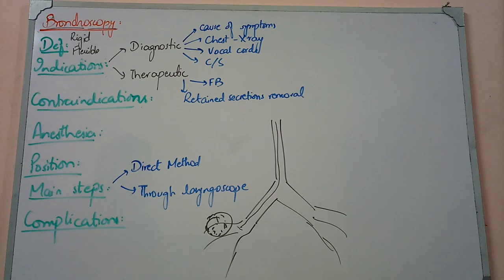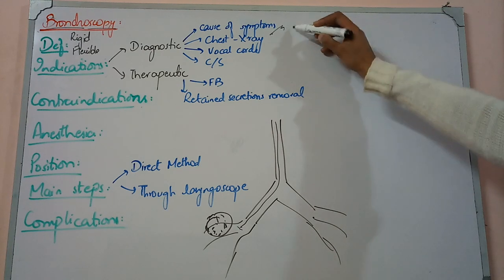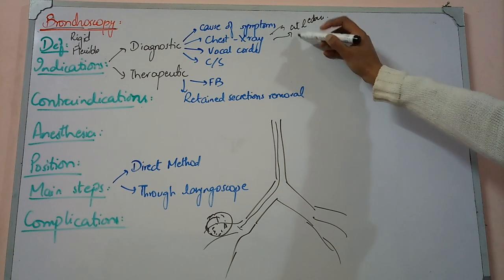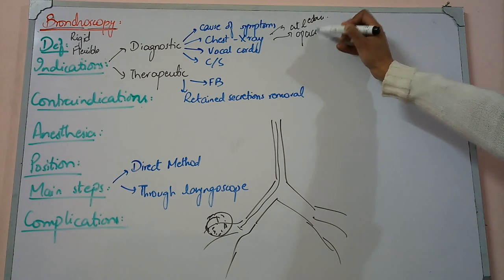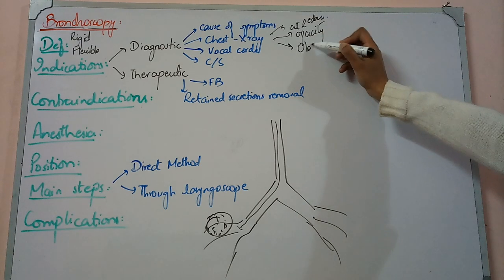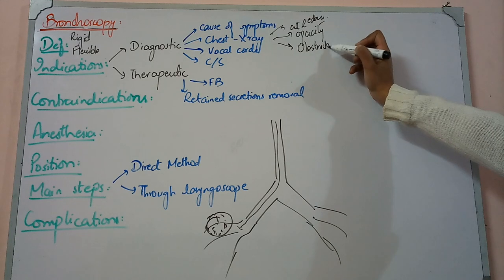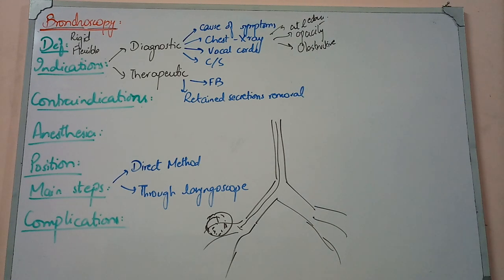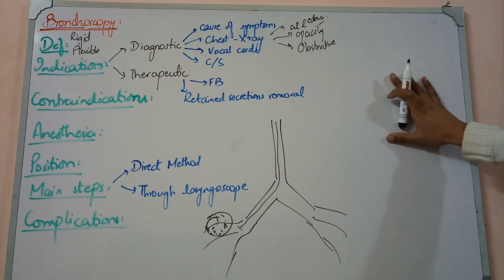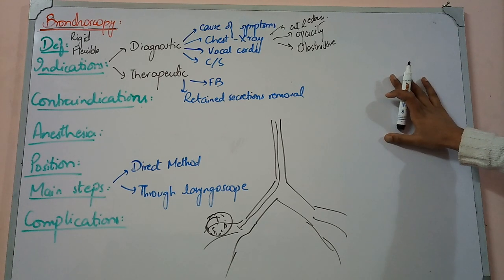Also, if you have a chest X-ray showing certain findings, there are four things: first is atelectasis — which means a collapse seen on chest X-ray; second is an opacity in the lungs that you want to see directly; third is obstructive emphysema, which is dilation of the airways, and you want to see what the problem is in that segment; and fourth is a shadow on the chest X-ray that you want to view directly. You can also do bronchoscopy to visualize the vocal cords in detailed view.